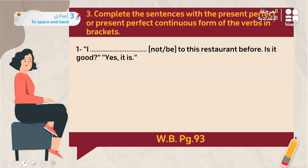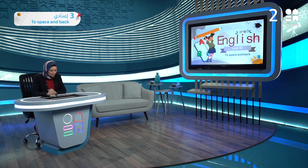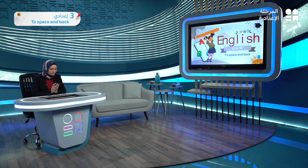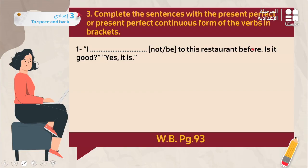Complete the sentences with the present perfect or present perfect continuous form of the verbs in brackets — workbook page 93. Number one: 'I ___ not ___ to this restaurant before. Is it good?' The keyword 'before' signals the present perfect. This is about a past experience — he has never been to this restaurant. The answer uses present perfect with 'not': 'I have not been to this restaurant before.'